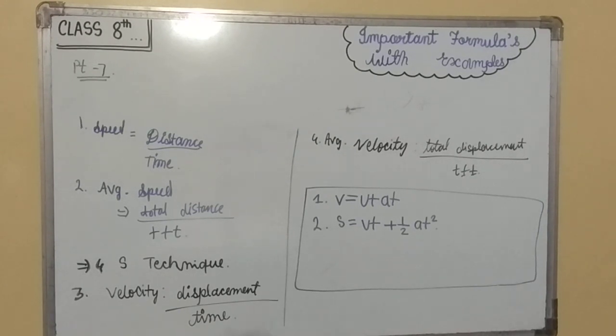Third equation is V square minus U square should be equal to 2aS. This is the velocity-displacement relation. But note that these equations are applicable only for a moving body with uniform acceleration.